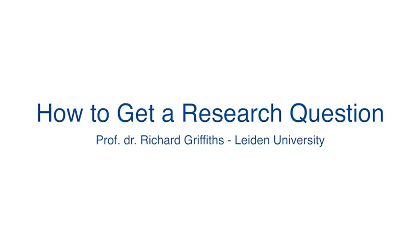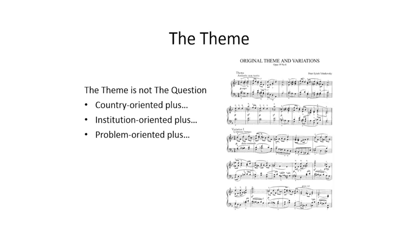So now the first thing to do is to find a theme. A theme is not the same as a research question — it's more like a frame of reference, and there are several forms it could take. It could be country oriented, for example, Country X and the United Nations Security Council. It could be institution oriented: how is the composition of the UN Security Council determined? And it could be problem oriented: a conflict involving a Security Council member.